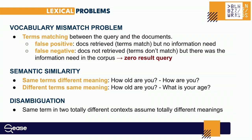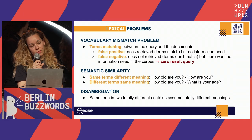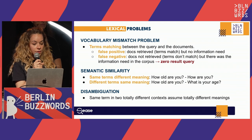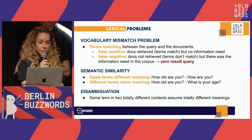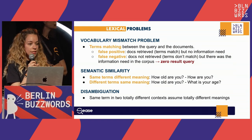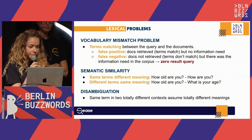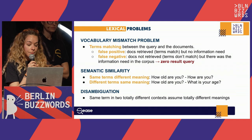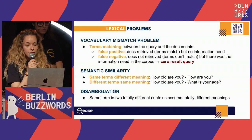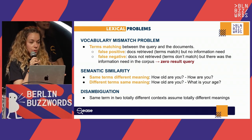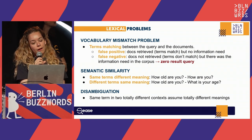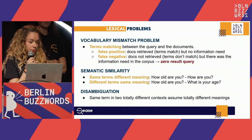So why do we need a large language model for this task? There are some lexical problems related to keyword matching in search. The first is the vocabulary mismatch problem, where we can encounter false positive and false negative results. With false positives, we retrieve documents that match the query terms but do not contain the information the user is actually searching for. With false negatives, we fail to retrieve documents because the terms don't match the user query, even though the collection contains documents that answer the user's information need. In the worst case, we get a zero result query.